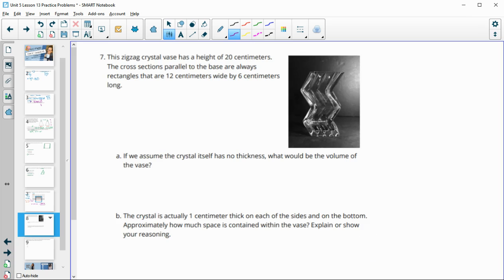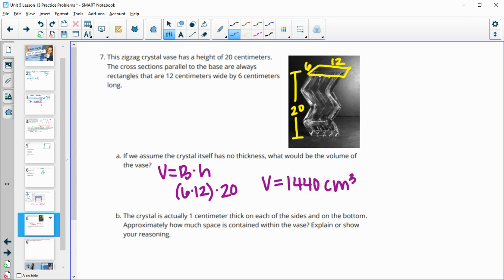Number seven, this zigzag crystal vase has a height of twenty centimeters, and the cross sections parallel to the base are always rectangles. So there's this rectangular opening here, and the rectangles are six by twelve centimeters. If we assume the crystal itself has no thickness, what would the volume be? So we're just going to calculate the volume just with these dimensions. Volume is equal to area of the base times the height. Our base area here is six times twelve for that rectangle, and the height is twenty. So when we multiply all of this out, six times twelve times twenty, we're going to get 1,440 centimeters cubed. So if that glass had no thickness, this is the volume of the vase.